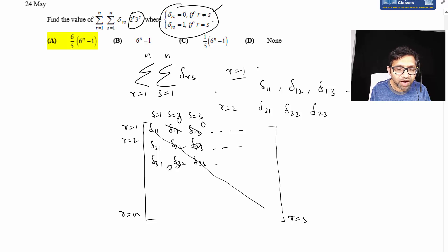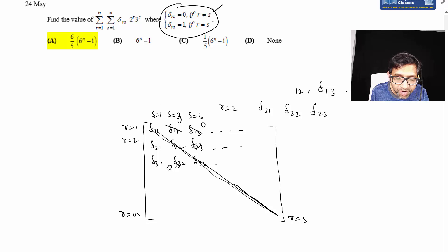Since r equals s is the only contribution, we can replace r with s. We don't need to go in two directions - just one linear direction. This becomes the sum of diagonal elements, so single sigma where r varies from one to n of 6 to the power r times delta rr.